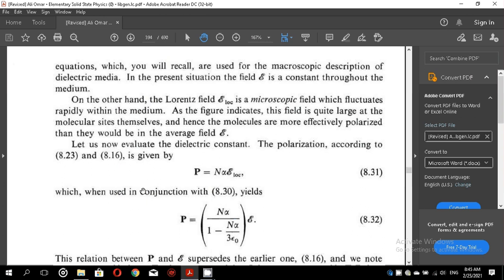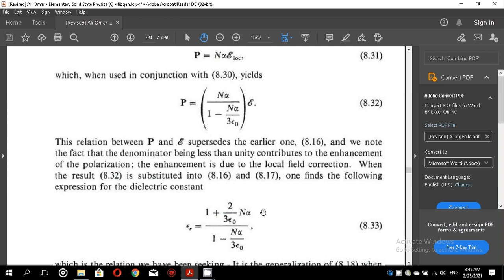Now, let us calculate the dielectric constant. The polarization according to equation 8.23 and 8.16 is given by equation 8.31, which when used in conjunction with equation 8.30 derived above yields P equals N alpha over 1 minus N alpha over 3 epsilon 0 into E. The relation between P and E supersedes the earlier one, equation 8.16 and we note the fact that the denominator being less than unity contributes to the enhancement of polarization. The enhancement is due to the local field correction.